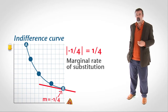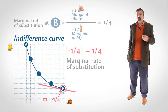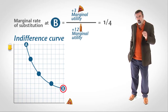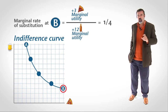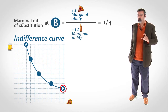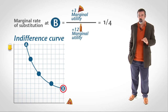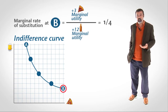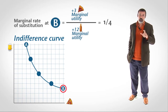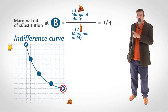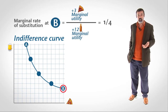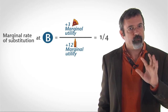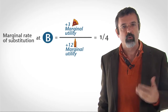Bundle B represents three beers and twelve slices of pizza. The marginal rate of substitution here is one fourth. This means that in order to keep your utility constant, you would have to gain one fourth of a beer for every one slice of pizza you lost. Because you are consuming so little beer and so much pizza, the utility you lose from consuming one less beer far exceeds the utility you gain from consuming one more pizza. So in order to maintain constant utility, you need only gain a fraction of a beer in exchange for losing one slice of pizza.